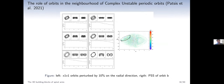In a work accepted this year, we study the role of orbits in the neighborhood of complex and unstable periodic orbits. I show some examples of orbits around a complex and unstable periodic orbit. We found that these orbits can support the spirals for a reasonable amount of time. These orbits are classified as sticky orbits, and we study their role in supporting the spiral arms.